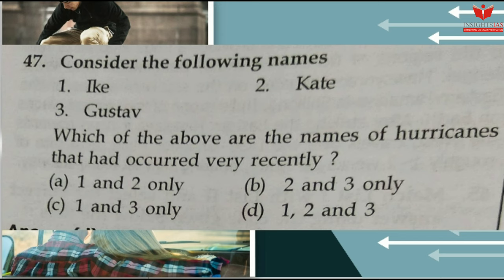A 2009 question was asked related to cyclones and hurricanes — mention in the comment box in which country it is called a hurricane. The question was: 'Consider the following names: 1. Ike, 2. Kate, 3. Gustav. Which of the above are the names of hurricanes that had occurred very recently?' The answer is Option D — all three (1, 2, 3). This was asked because many hurricanes and cyclones occurred in 2008. Similar questions are possible since many cyclones were witnessed in the Bay of Bengal in 2017–2018 and along the Gujarat coast in 2019.